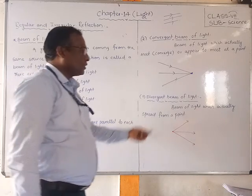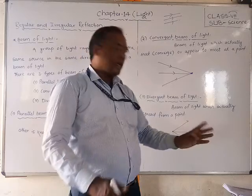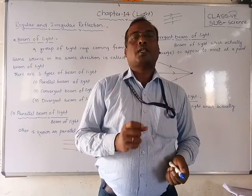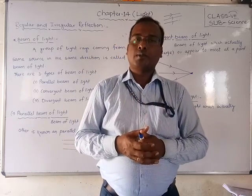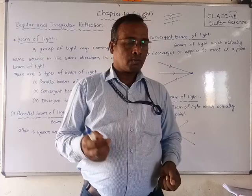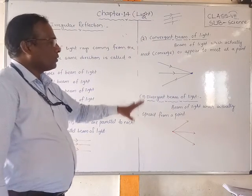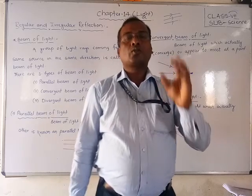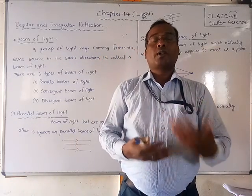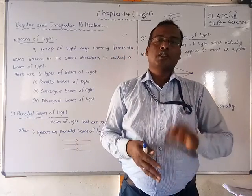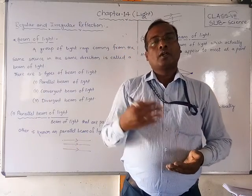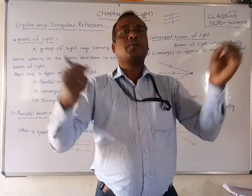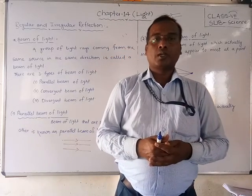What is a divergent beam of light? Divergent means the rays spread out from a single point in different directions. From one point the rays spread away, going outward. Such rays are called a divergent beam of light. So to summarize: parallel beam — rays are parallel to each other; convergent beam — rays converge at one point; divergent beam — rays spread out from one point.